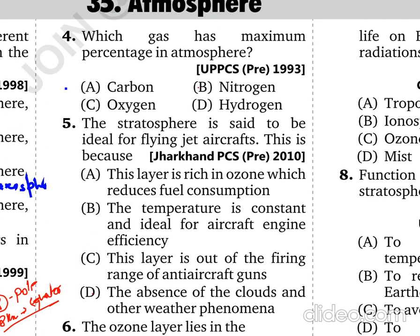Regarding gas percentages in the atmosphere: Nitrogen has the maximum at 78%, Oxygen is around 21%, Carbon dioxide is around 0.03%, and Hydrogen is about 0.005%.